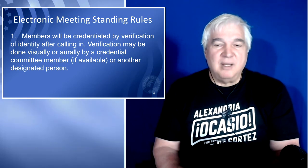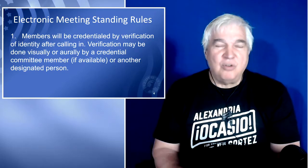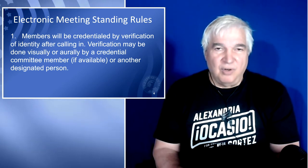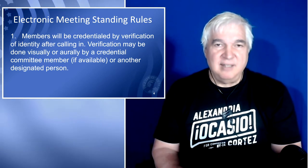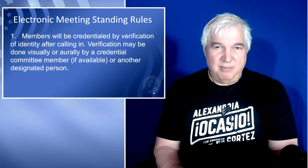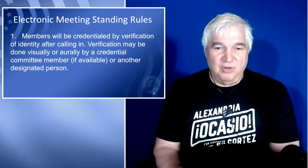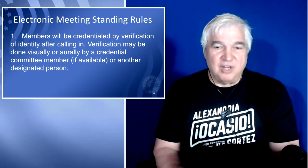The first rule: members will be credentialed by verification of identity after calling in. Verification may be done visually or orally by a credential committee member if available, or another designated person. This is to make sure that it is very clear who is credentialed to vote. Many of our meetings have alternate delegates attending — they're more than welcome to attend, and most committees will allow them to speak, but they're not credentialed members and are not able to vote. So it's important to have a list of who is credentialed to vote.